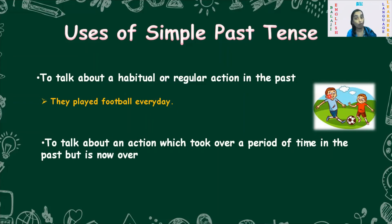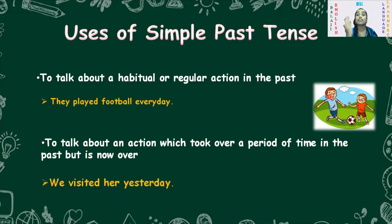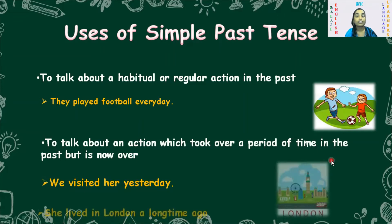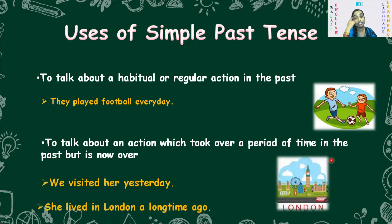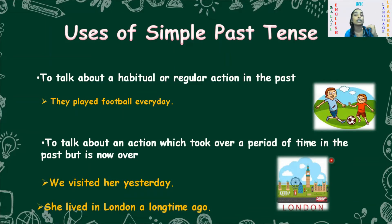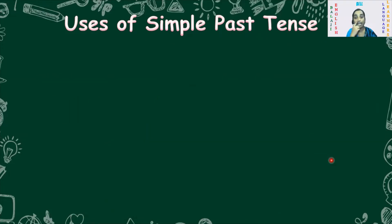For example: 'We visited her yesterday' — yesterday is over, it is no longer going on. Another example: looking at the picture of London — 'She lived in London a long time ago.' This action took place over a period of time in the past and is now not happening. That comes under simple past tense.